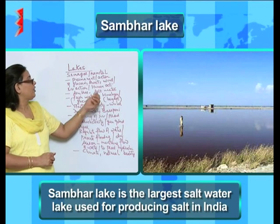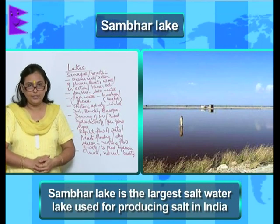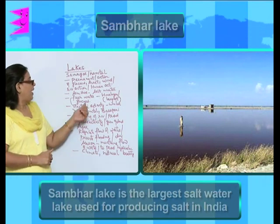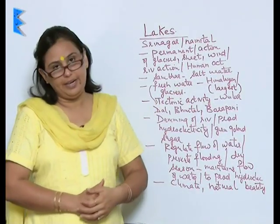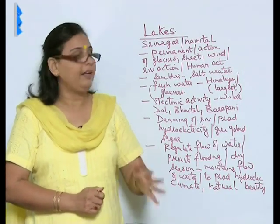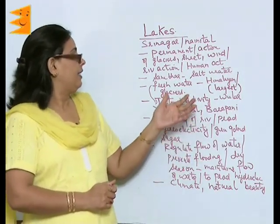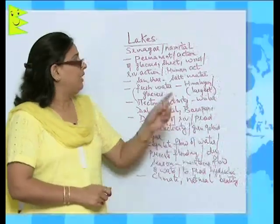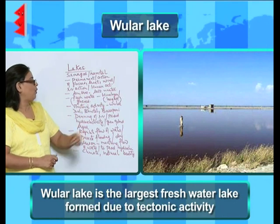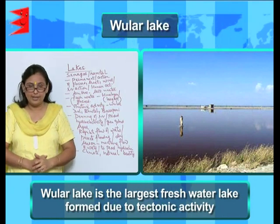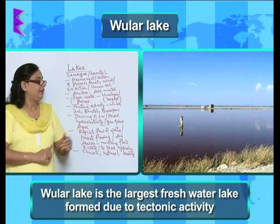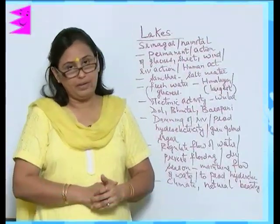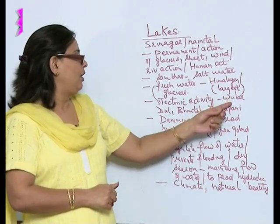The Sambar Lake is the largest saltwater lake in India, and salt is made from this lake. As far as the freshwater lakes are concerned, they are generally the Himalayan lakes formed due to glaciers. But the largest freshwater lake, the Wular Lake, has been formed due to tectonic activity.